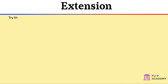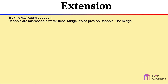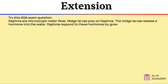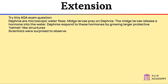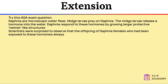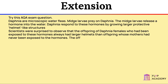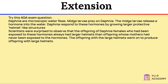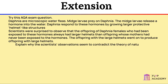Extension: Try this AQA exam question. Daphnia are microscopic water fleas. Midge larvae prey on daphnia. The midge larvae release a hormone into the water. Daphnia respond to these hormones by growing larger, protective, helmet-like structures. Scientists were surprised to observe that the offspring of daphnia females who had been exposed to these hormones always had larger helmets than offspring whose mothers had never been exposed to the hormones. The offspring with the large helmets went on to produce offspring with large helmets. Explain why the scientists' observations seem to contradict the theory of natural selection.